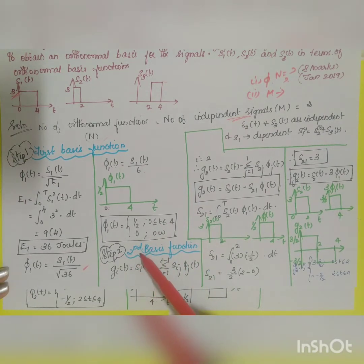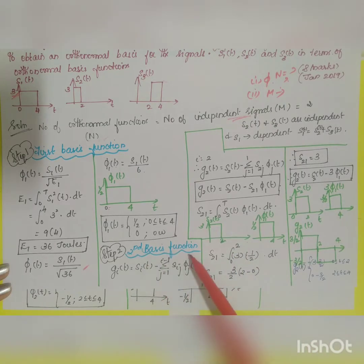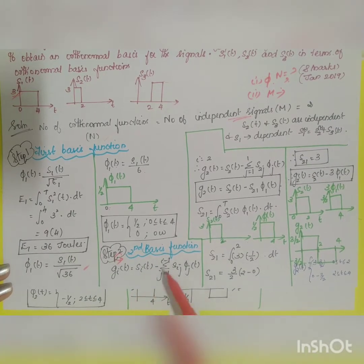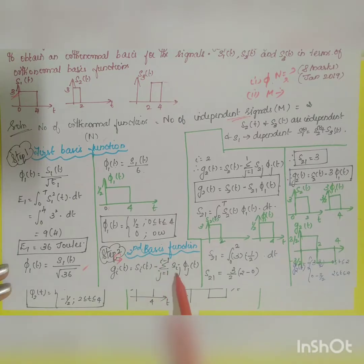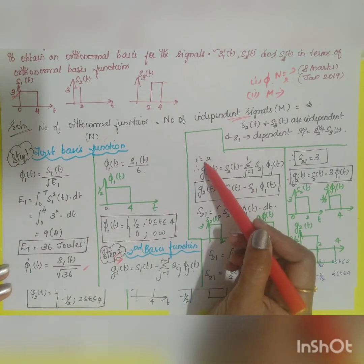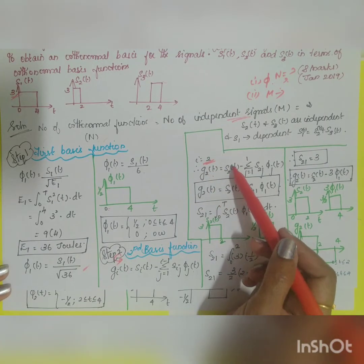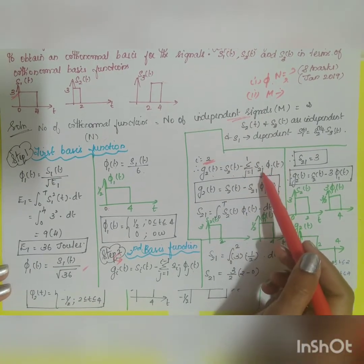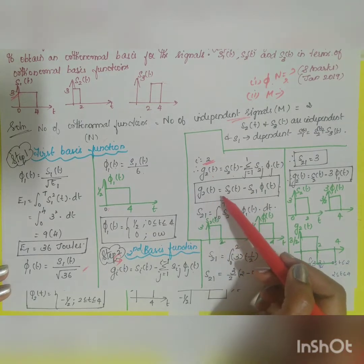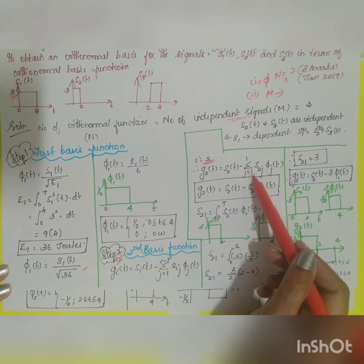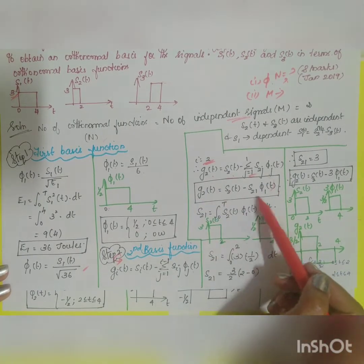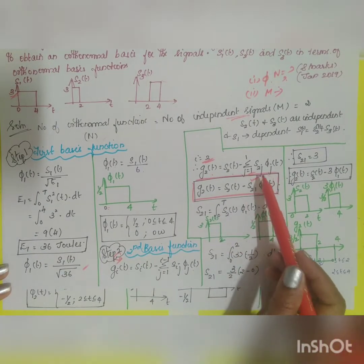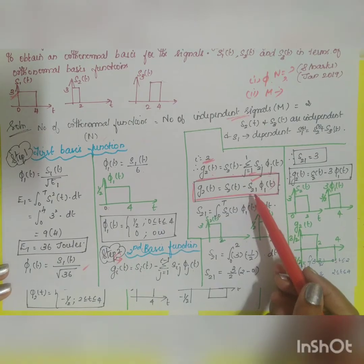Step 2: find the second orthonormal basis function by introducing an intermediate term. The formula is g_i(t) = s_i(t) − Σⱼ₌₁^{i−1} s_{ij} φⱼ(t). For i = 2: g₂(t) = s₂(t) − Σⱼ₌₁^{1} s₂ⱼ φⱼ(t) = s₂(t) − s₂₁ · φ₁(t). We now need to find the coefficient s₂₁.